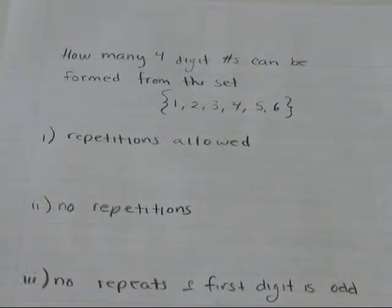The question is: how many four-digit numbers can be formed from the set {1, 2, 3, 4, 5, 6}?